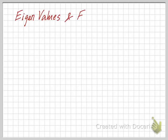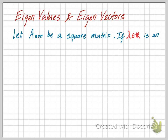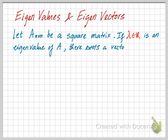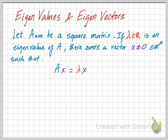This video shows how to find eigenvalues and eigenvectors of a square matrix. Let A be a square matrix of size n by n. If lambda, a constant value in R, is an eigenvalue of A, then there exists a nonzero vector x in R^n such that A times x equals lambda times x.